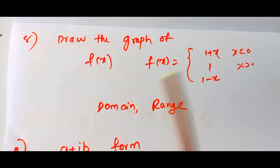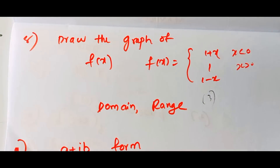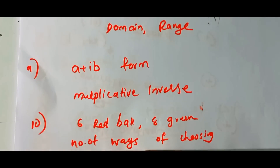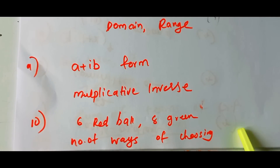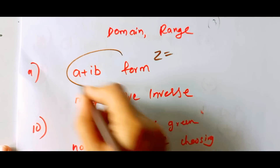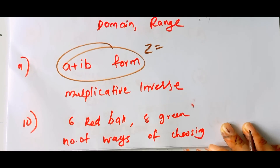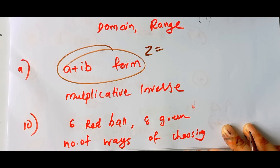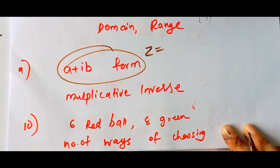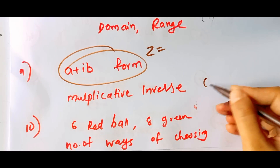You will see a different mark in the topic. We will find the complex number of the variables — A plus iB formula. You can see the words: conjugate and multiplicative.